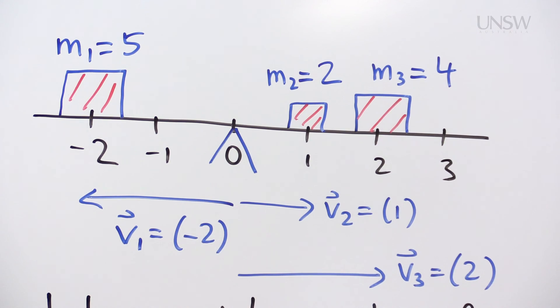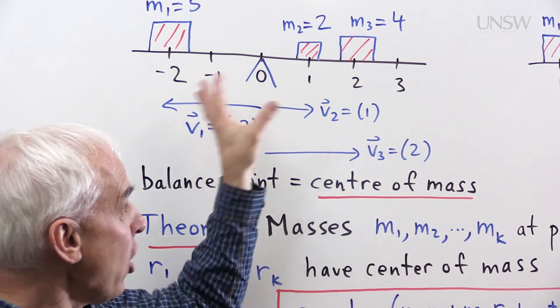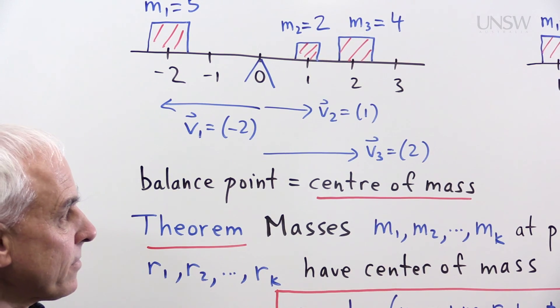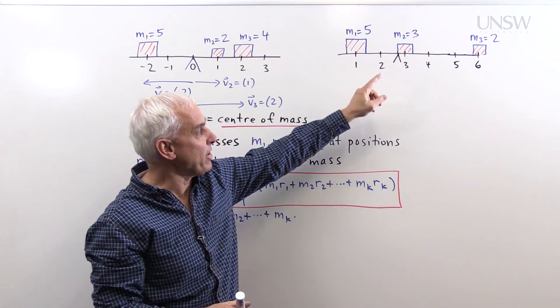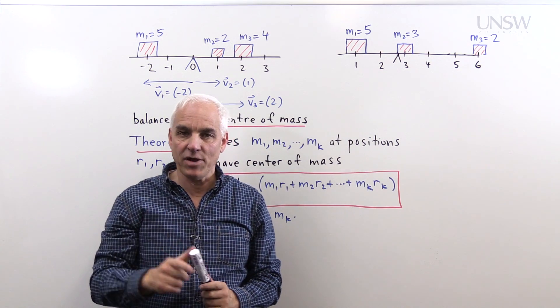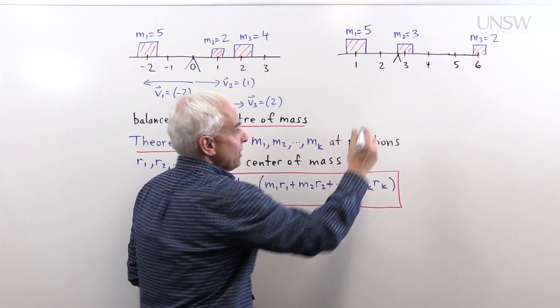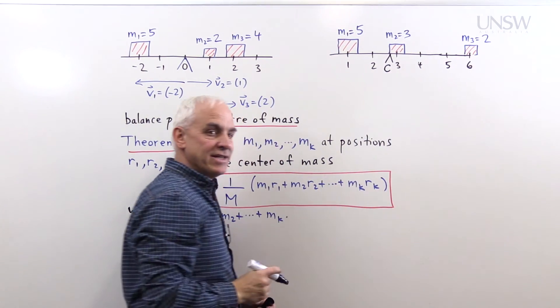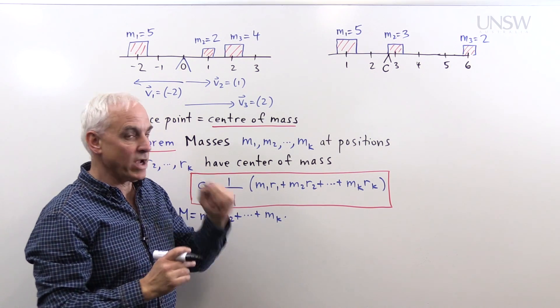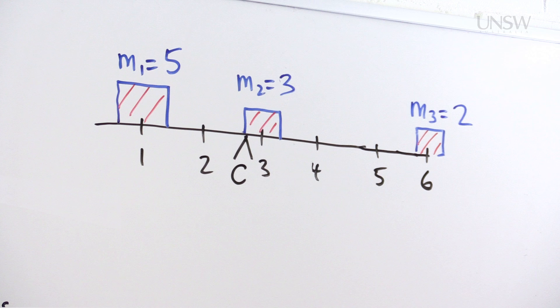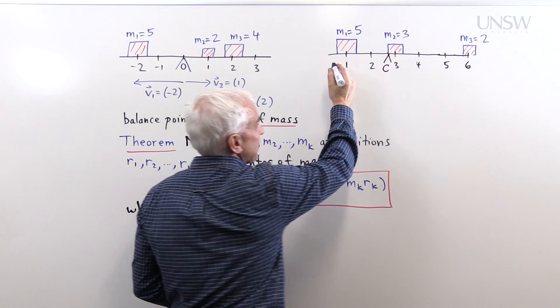Now this balance point is usually called the center of mass of the three masses. And here's another example where we have three masses in positions that are known, but we don't know where the center of mass is. So let's see if we can calculate it. Let's suppose that the center of mass is at some position C, which is currently unknown to us. How could we figure out what C is? Well, we have to take the various moments of these three masses around the unknown point C, and hopefully set that equal to zero. So let's calculate the moments here.